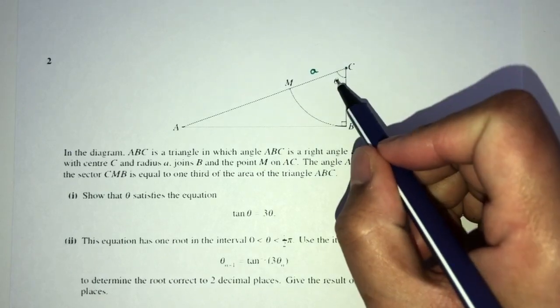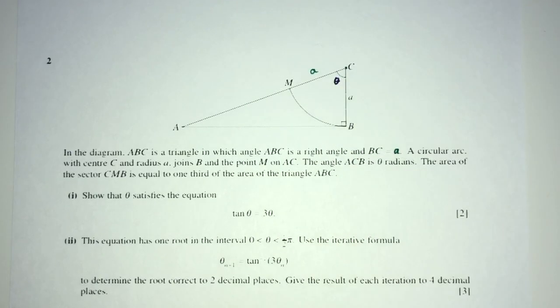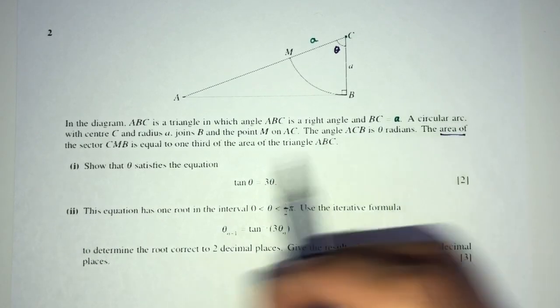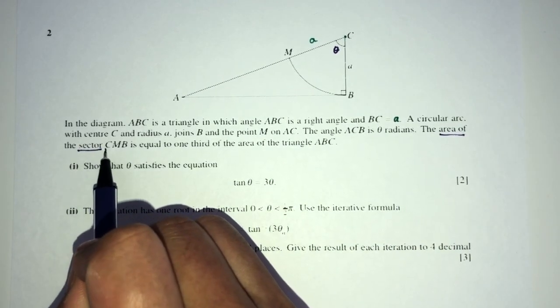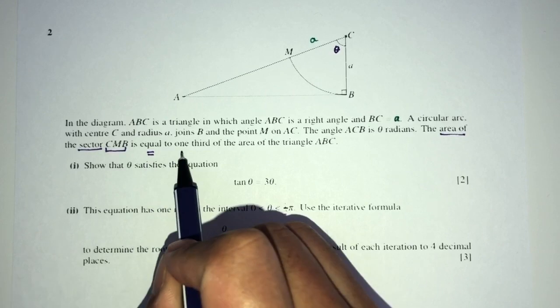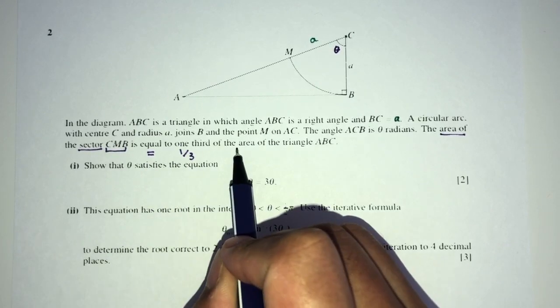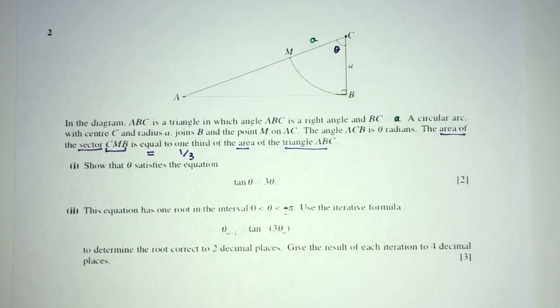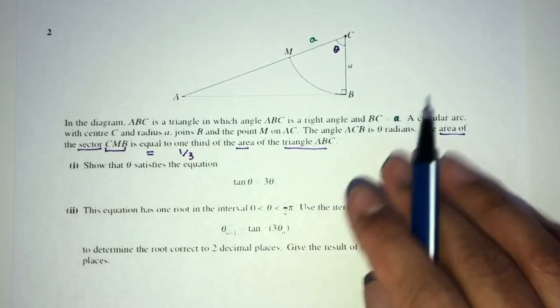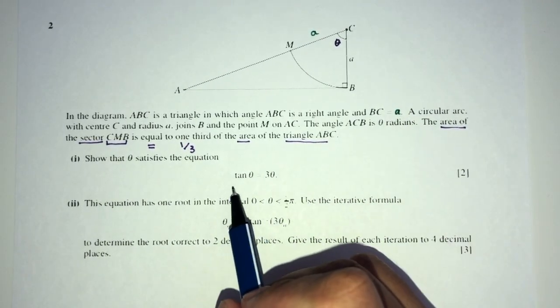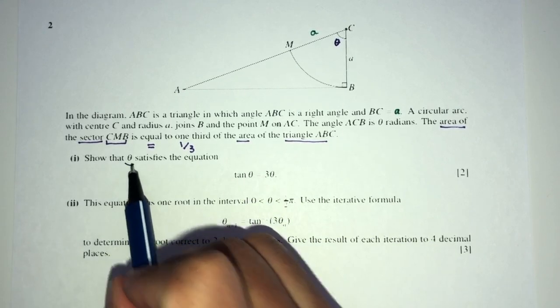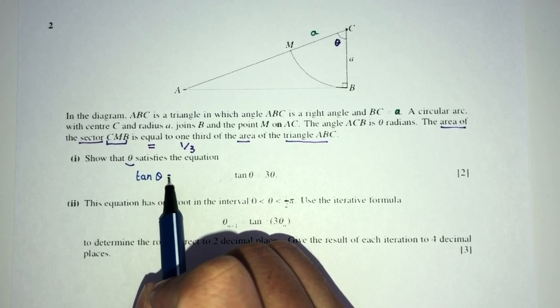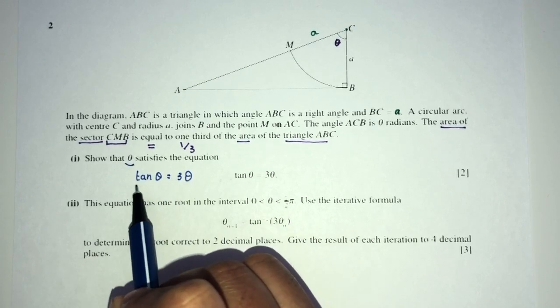Now, the angle ACB is θ, so here we have θ for the angle. Now, this is the most important part. The area of the sector CMB is equal to one-third the area of triangle ABC, so that's the main information we have to use in this question. Now, part one, we have to show θ satisfies this equation, which is tan θ = 3θ, so we have to show this in the end.